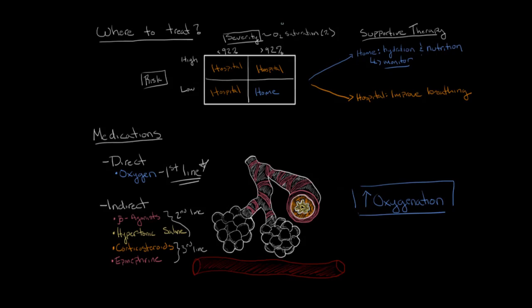Let's briefly recap the treatment of bronchiolitis. Remember that the most important question to ask is where the child needs to be treated. Based on their risk and severity of disease, you will decide whether or not the child needs to go to the hospital or can be treated with supportive therapy at home. If the child needs to go to the hospital, remember that the goal of therapy is to improve oxygenation and supplemental oxygen is the first line treatment.